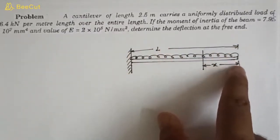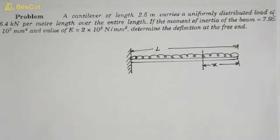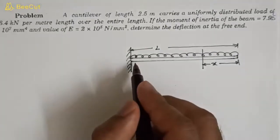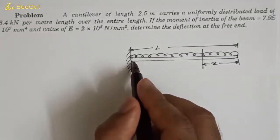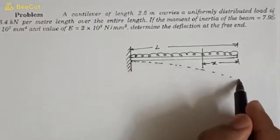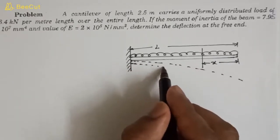We have to find the deflection at the free end. Suppose that we don't have any formula for this, so first of all we will derive the formula for the general case, then we will put all the values in that formula to get the deflection.